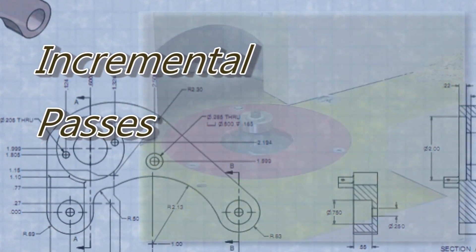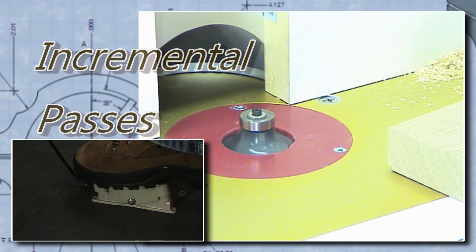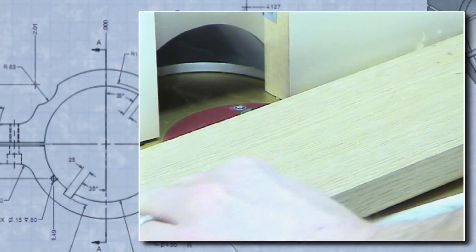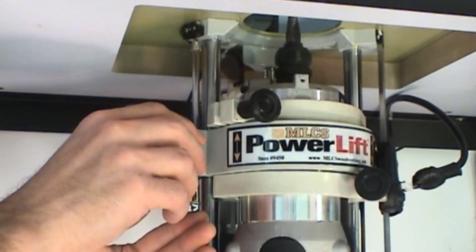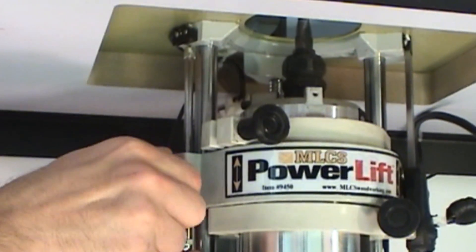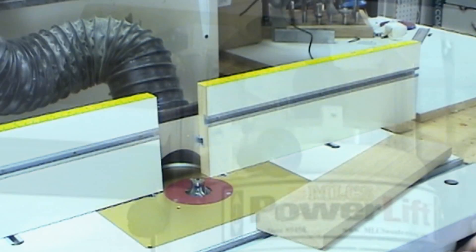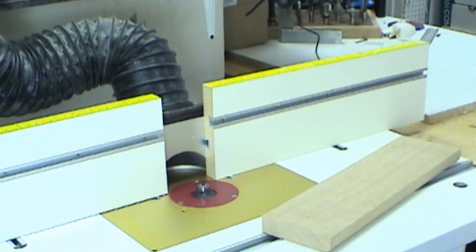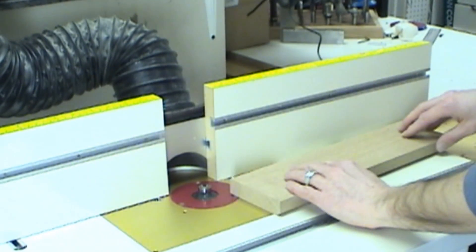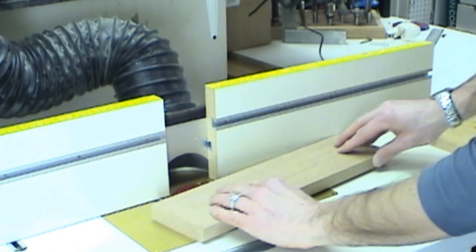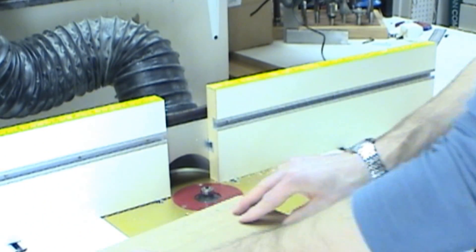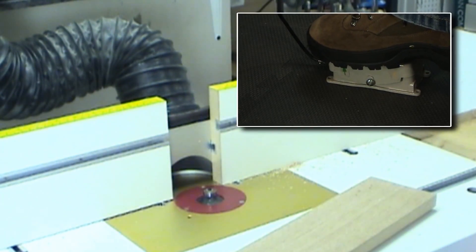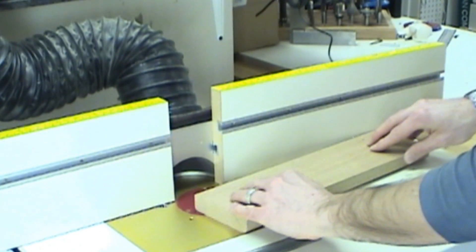Most router bits aren't designed to cut the full profile in a single pass. That's where the power lift really shines. You can use the depth stop to set the max depth that the router bit should protrude above the table, and then lower it back down before making your first cut. In between passes, without shutting down your router, you can raise the router bit slightly by using the foot pedal. And you don't have to worry about bringing the bit up too far, because it'll automatically stop where you've set the depth stop.